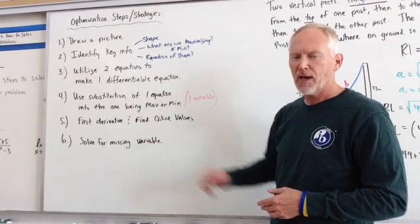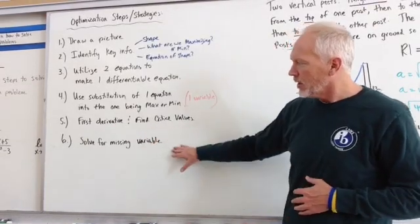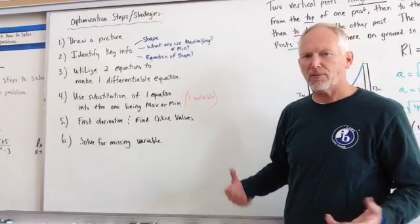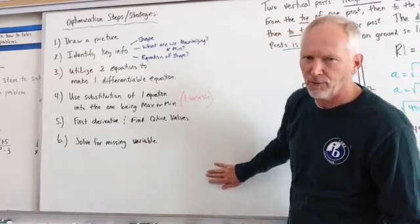So that might, you might want to squeeze in here is like a five and a half. Let's take the second derivative and find the concavity of the function. Six, solve for that missing variable and then finally answer the question that they have here for us.